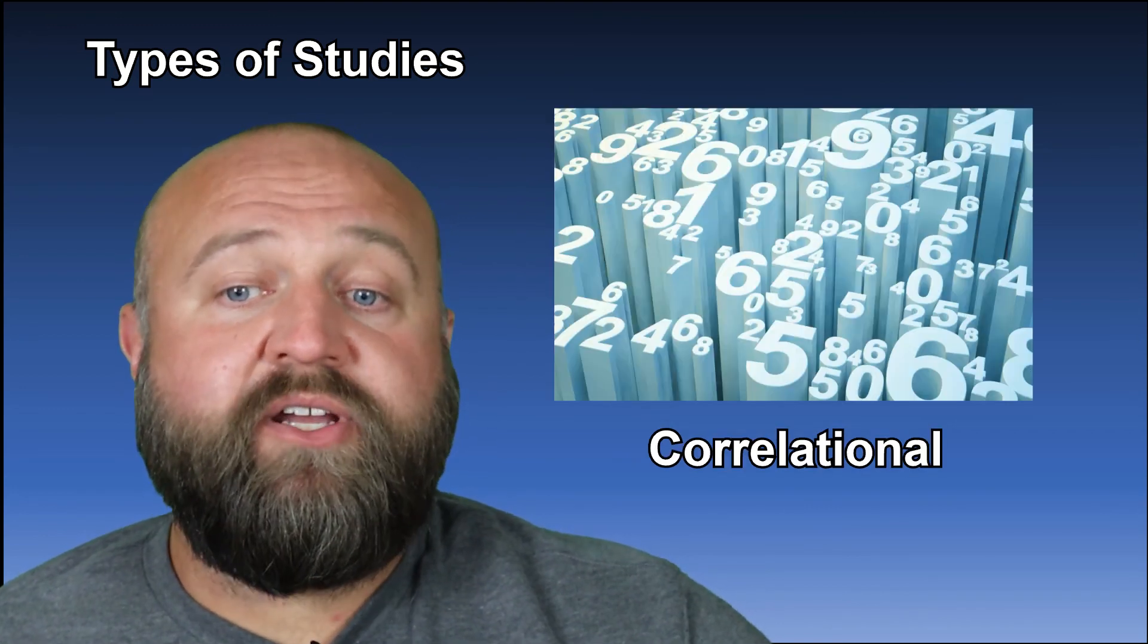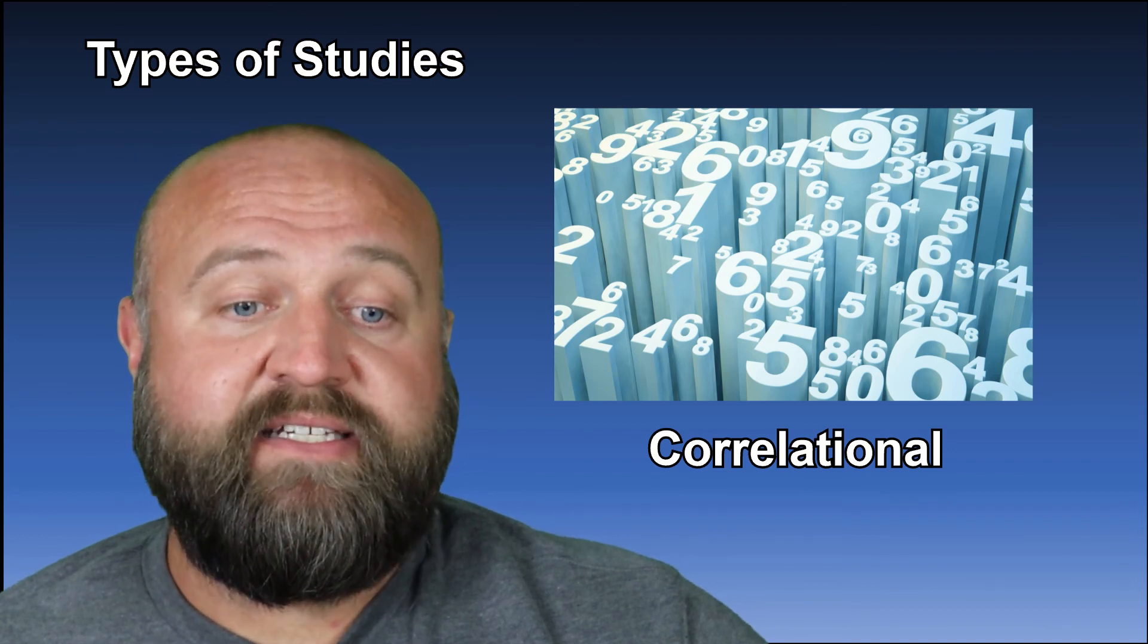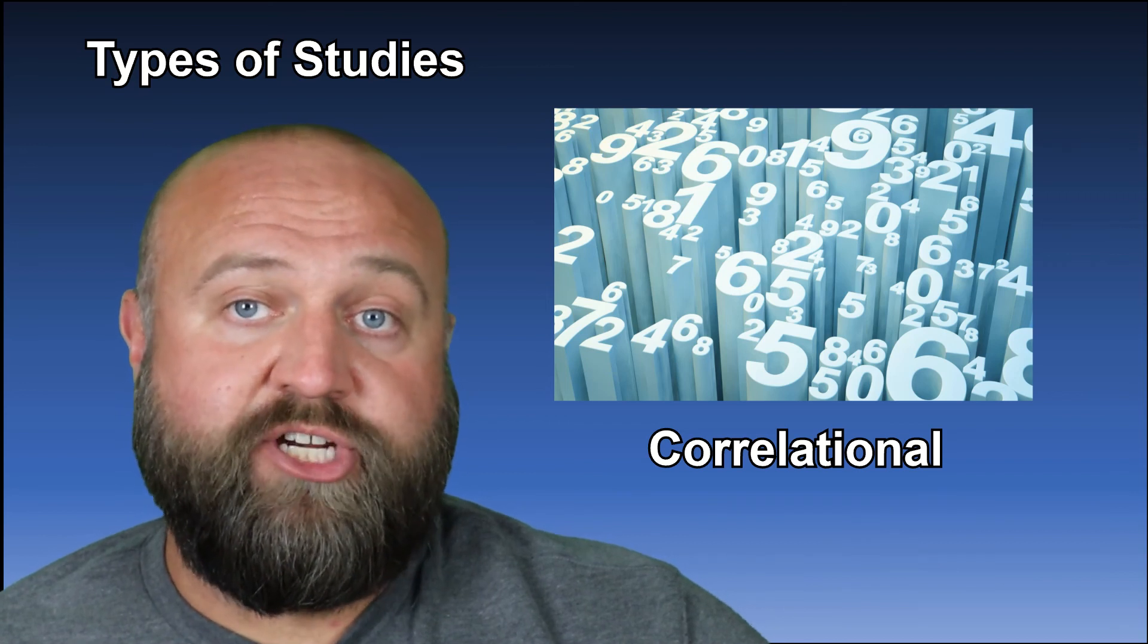Correlational studies look at the relationship that exists between at least two different things. They rely heavily on looking at statistical data to show these relationships.